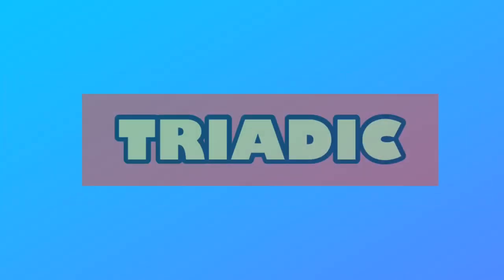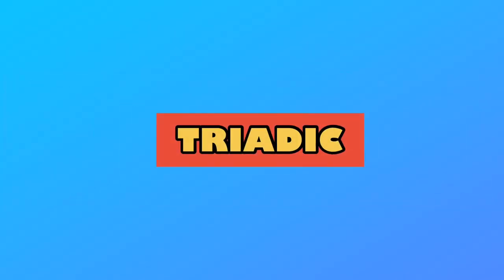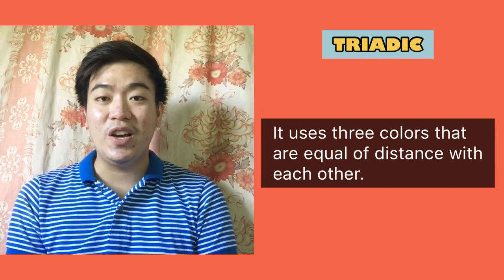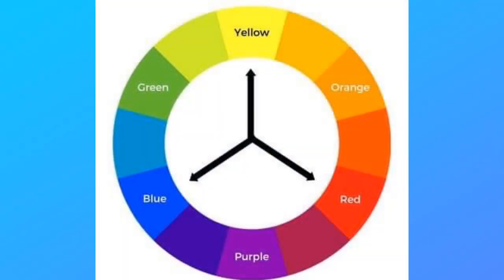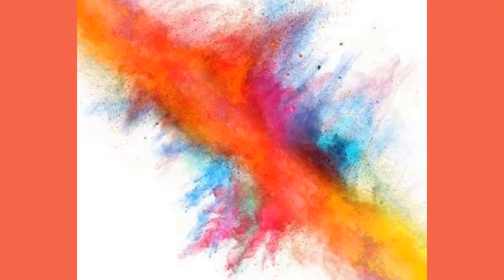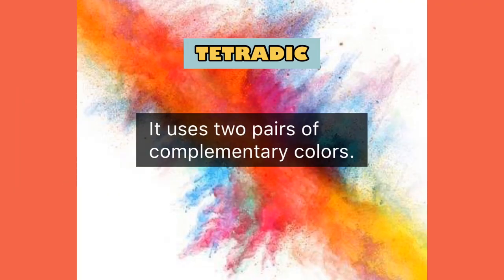Next, we have triadic, a color scheme that uses colors that are of equal distance from each other. And last, we have tetradic, also known as the double complementary color scheme, which uses two pairs of complementary colors.